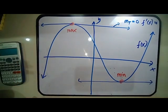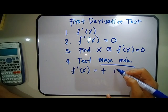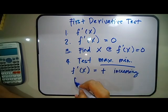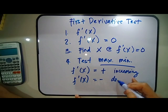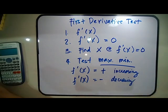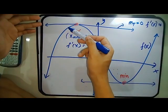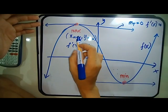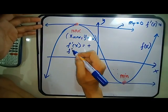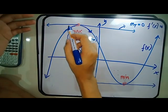To determine which point is maximum and which is minimum, we use the first derivative test. If f prime of x is positive, the graph is increasing. If f prime of x is negative, the graph is decreasing. So if you substitute a value less than x-max and it's positive, the graph is increasing to the left. If you substitute a value greater than x-max and it's negative, the graph is decreasing to the right. This confirms you have a maximum point.